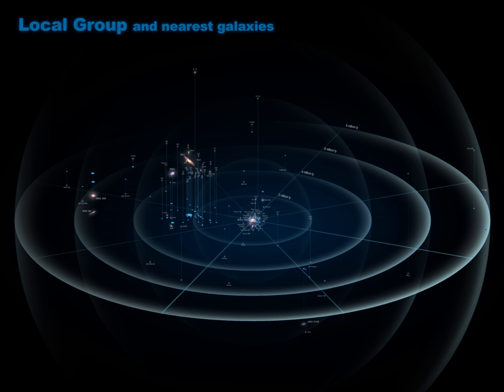The term 'the local group' was introduced by Edwin Hubble in Chapter 6 of his 1936 book The Realm of the Nebulae. There, he described it as 'a typical small group of nebulae which is isolated in the general field,' and delineated, by decreasing luminosity, its members.